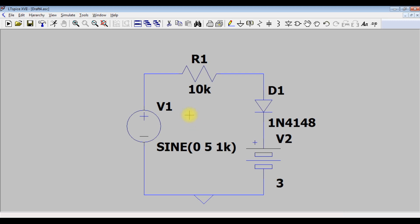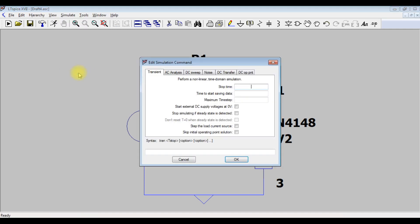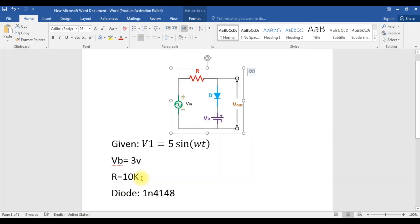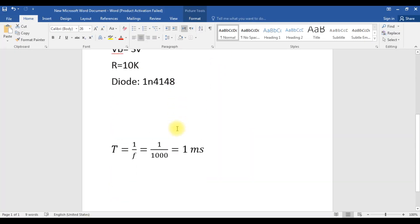We drew the circuit. Now in order to simulate this circuit, we need to choose the simulation time. Press on simulate, edit simulation command, choose the time. In order to choose the period, we should divide our frequency using this equation: period equal 1 over f. Frequency is 1k, so the period is one millisecond for one cycle.